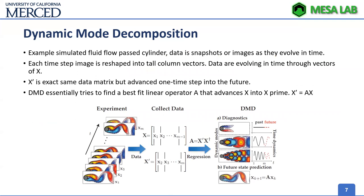One example is the famous fluid flow past a cylinder, where each time-step image is considered one data point. These data points are reshaped into tall column vectors consistent with the X matrix. X prime is the exact same matrix advanced one time step into the future. What DMD does is find the best-fit linear operator A that advances X to X prime.